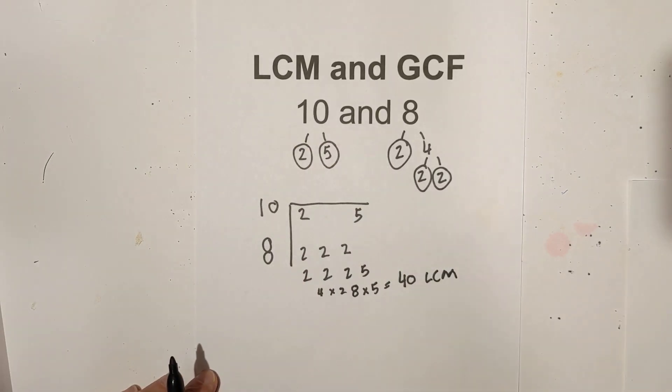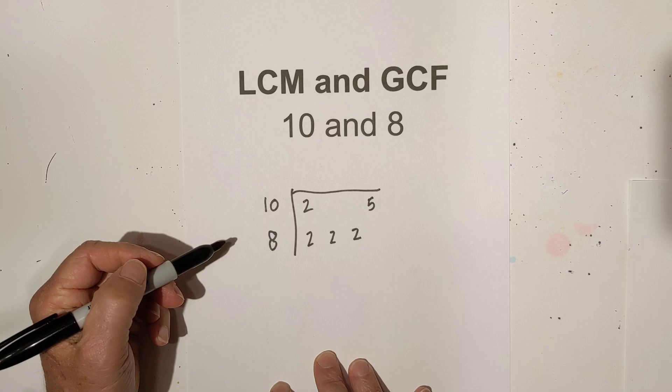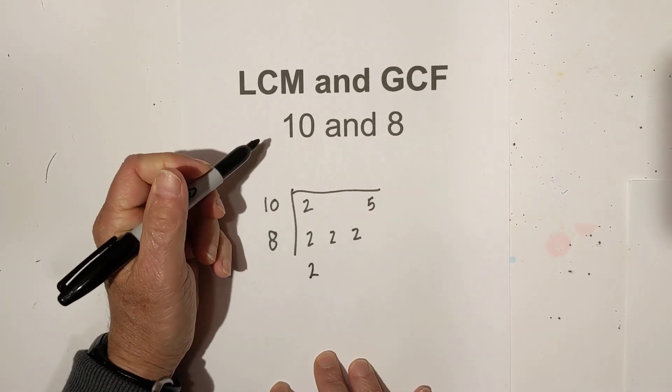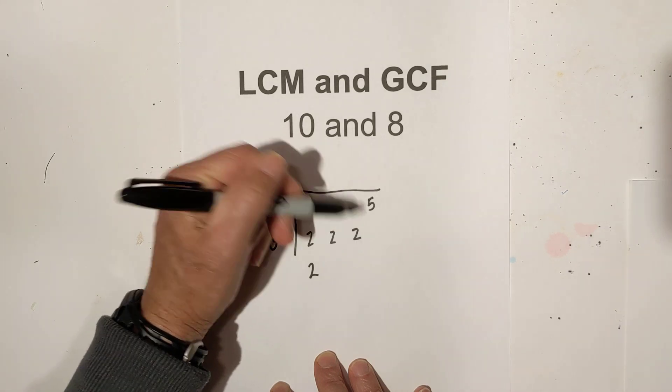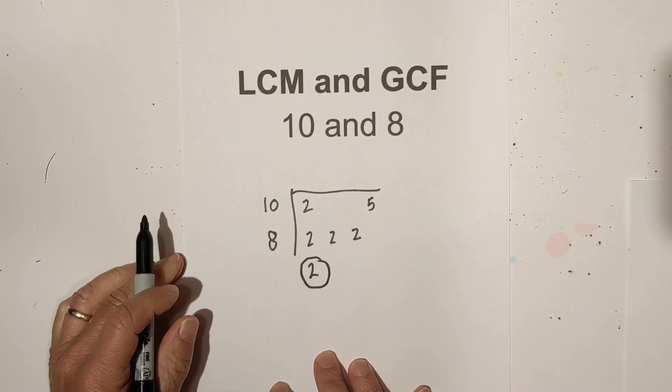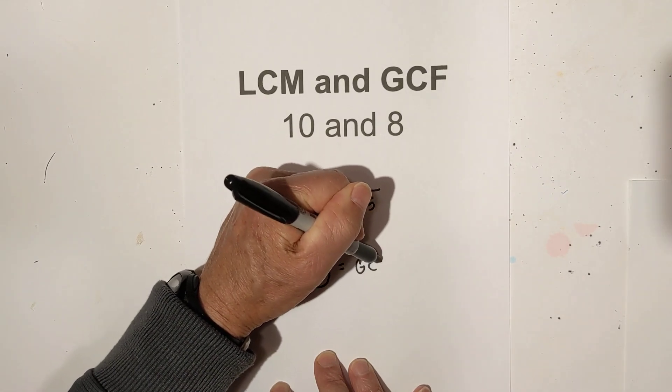Now let's go over the GCF. For the GCF, greatest common factor, you follow this rule: if you have a pair, you bring down the pair. If you don't have a pair, you don't bring it down. It looks like we only have one pair. So the greatest common factor of 10 and 8 equals 2.